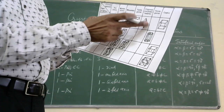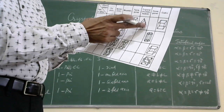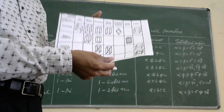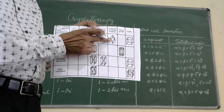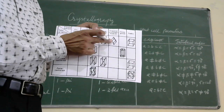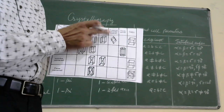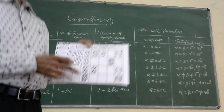In the rhombohedral system, all three sides are equal but all three angles are also equal to each other — though not equal to 90 degrees. This is the rhombohedral arrangement, also referred to as trigonal.